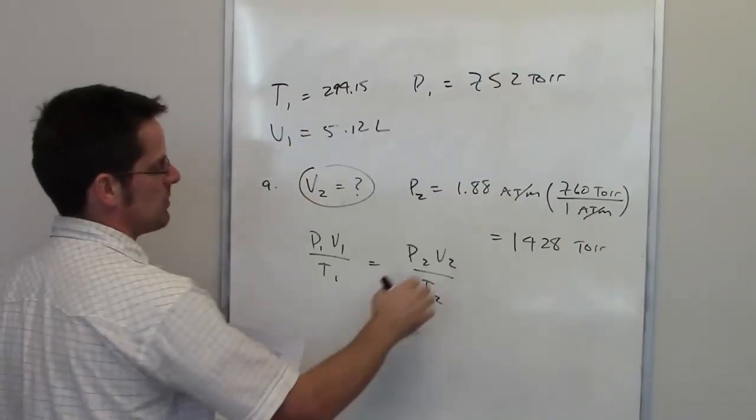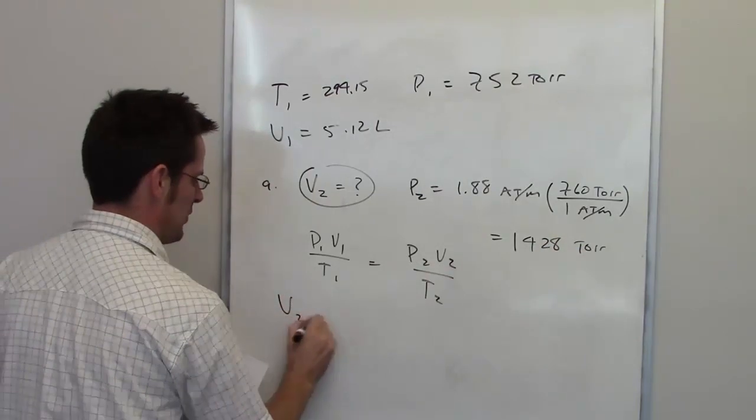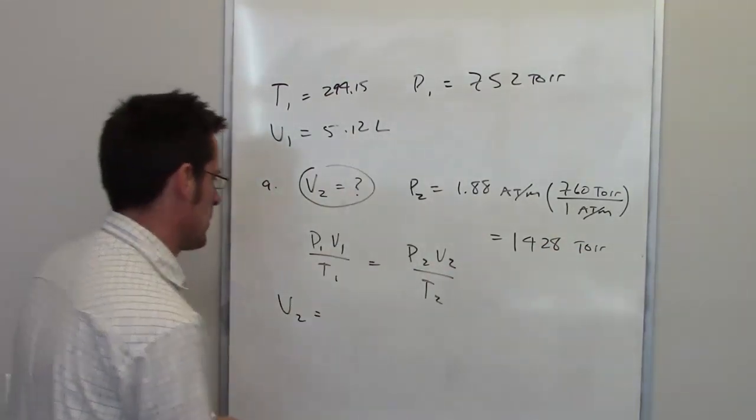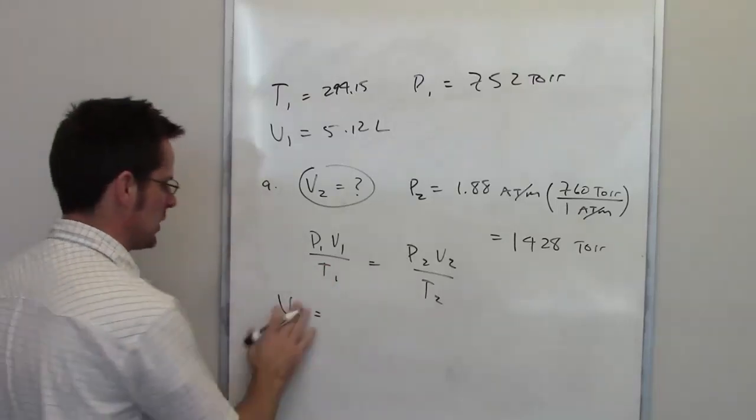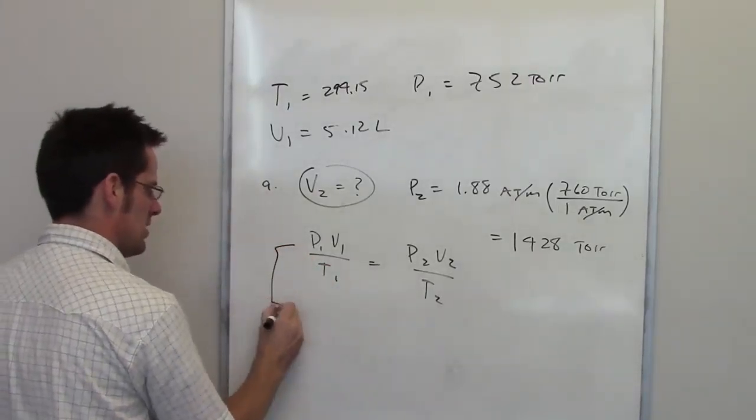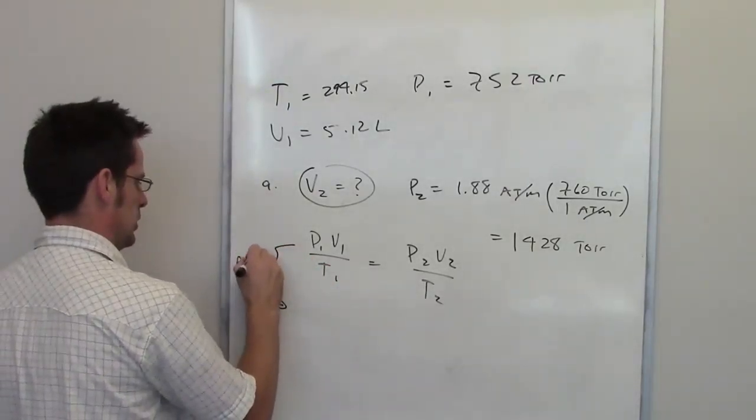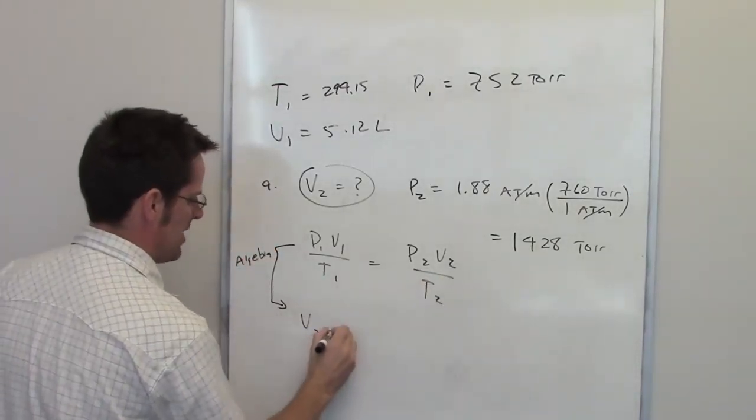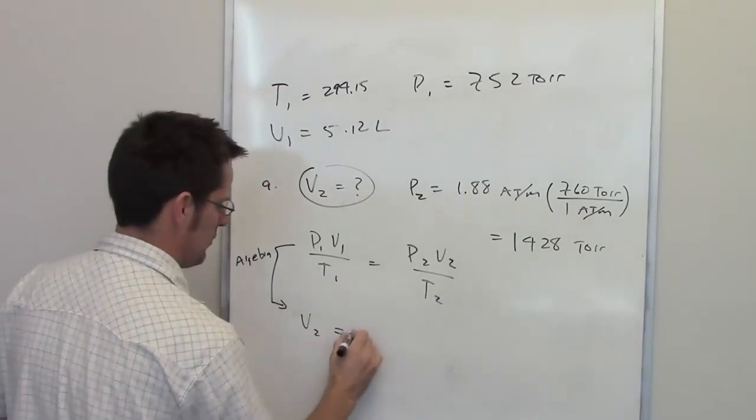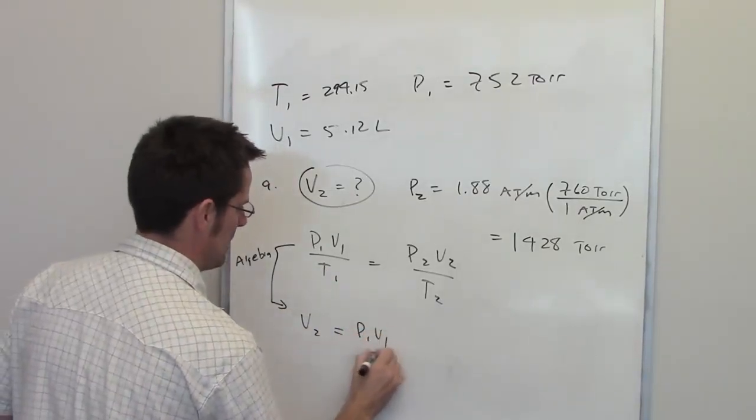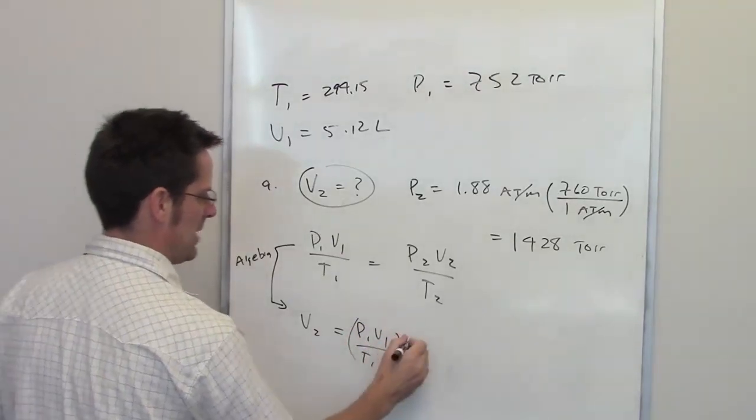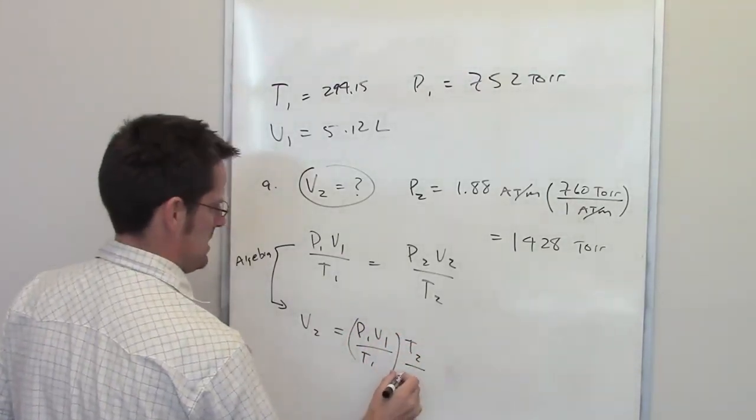The point of this problem is to determine what the final volume is going to be. So V2 is going to equal something when we monkey around with all these other parameters. So what I'm going to do is use the magic of algebra. In fact, I'll go ahead and write down the word algebra right here. I'm going to get V2 on one side and then I'm going to get everything else on the other. So V2 is going to be equal to P1 multiplied by V1 divided by T1, all of that multiplied by T2 divided by P2.